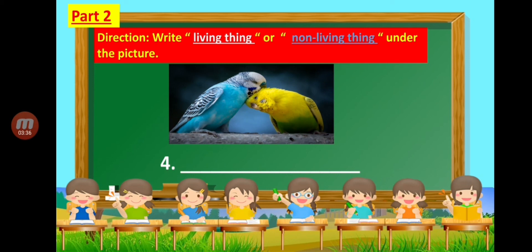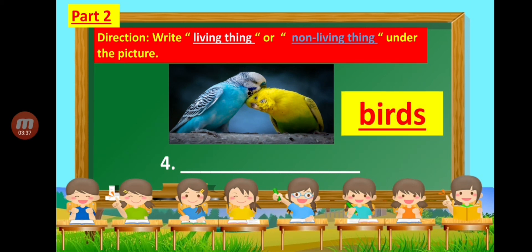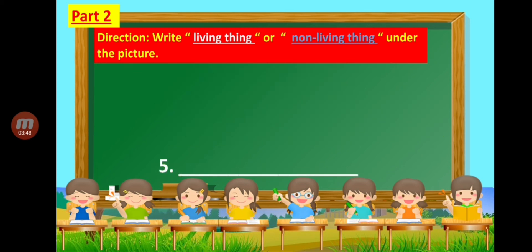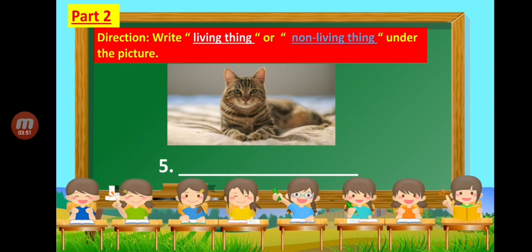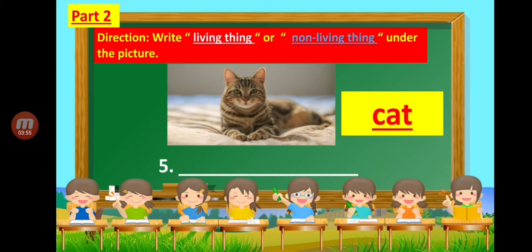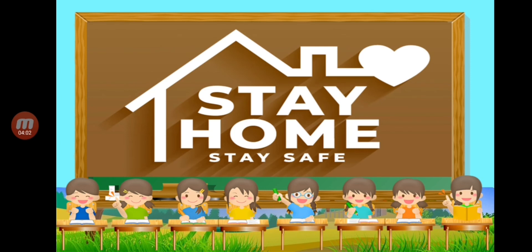Number 4: These are birds. Are birds a living thing or a non-living thing? Number 5: It's a cat. Is a cat a living thing or a non-living thing? That's all for today. Stay home and stay safe!